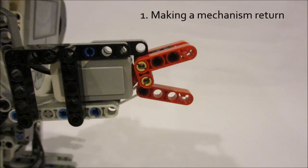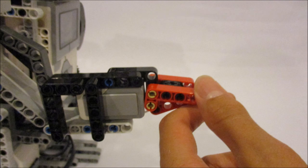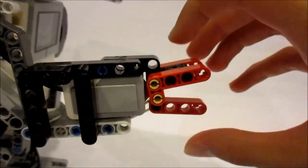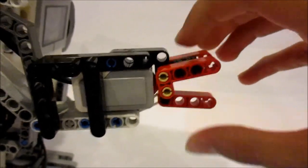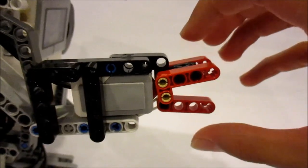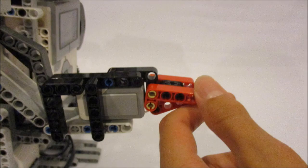An example of using the springy property of a rubber element is using a rubber band as a type of spring to get a mechanism to return to a certain position. Here you can see that's what I did in the grunt when I designed his little hand. The bottom finger is attached to a rubber band, which is attached to a fixed point on his arm. So when you squeeze the hand, it stretches out the rubber band. And then after you release the pressure on his hand, the rubber band pulls the finger back, which in turn opens up the entire hand again and gets it to return to its original position. So that's an example of making use of the springy nature of a rubber element to make a mechanism return.